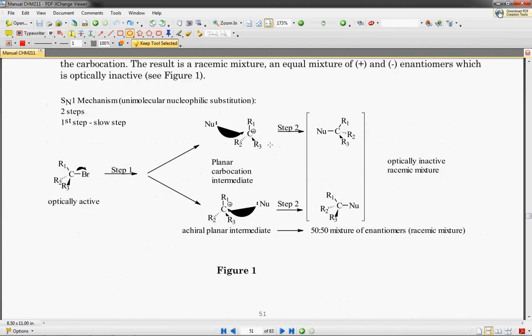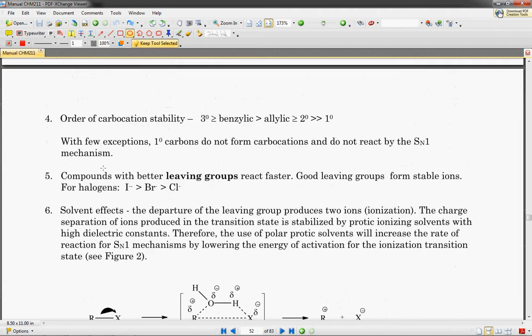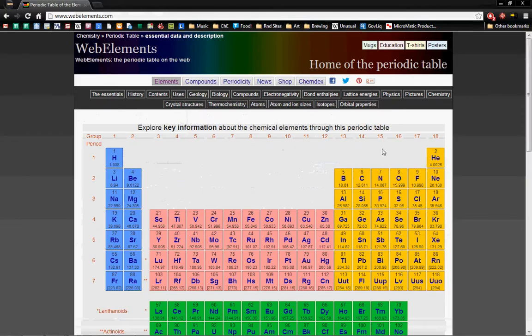If you look through here, it goes over them. It talks about leaving groups. For example, here we have our halogens are better leaving groups when they have a larger radius and form more stable ions. So if we take a look over here, if you remember,